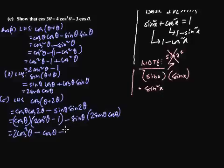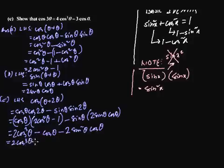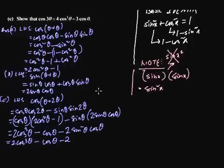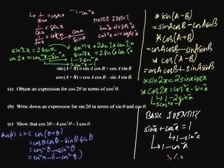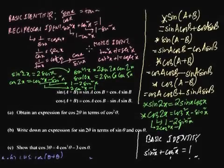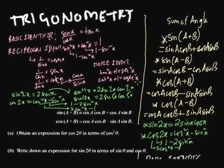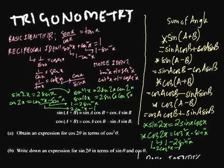Multiplying out: 2 sine theta cos theta gives 2 sine squared theta cos theta. So we get 2 cos cubed theta minus cos theta, minus 2 sine squared theta cos theta. We have sine squared here but we need only cos, so we use the basic identity: sine squared theta equals 1 minus cos squared theta.